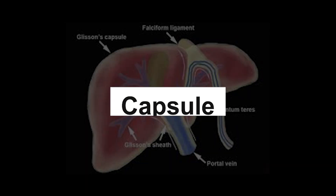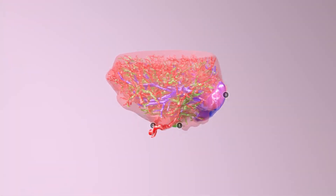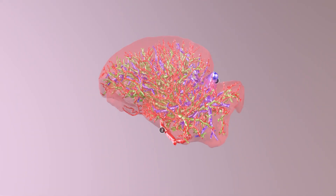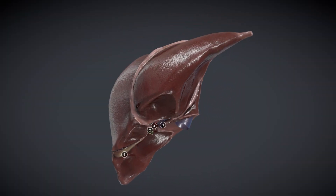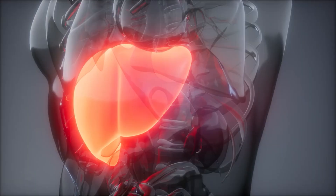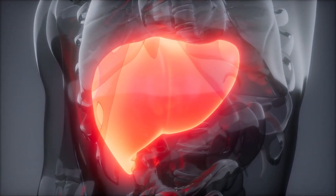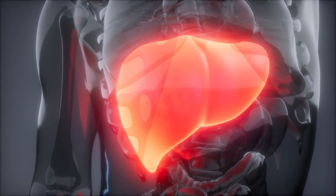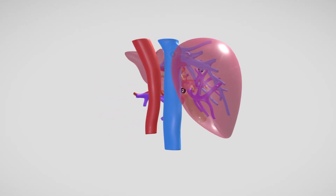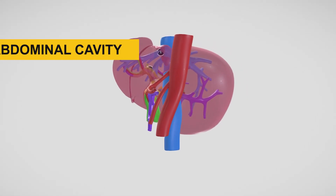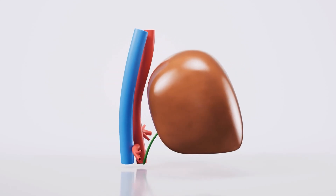Capsule. The liver capsule is a dense, fibrous connective tissue that forms a protective layer around the entire liver. It is relatively tough and resilient, and is composed of collagen fibers and connective tissue elements. The primary function of the liver capsule is to provide structural support to the liver and protect it from external forces, helping to maintain the liver's shape and integrity. The capsule also serves as a barrier that prevents the spread of infections or diseases from surrounding organs or tissues to the liver. It is attached to the liver's outer surface and also attaches to surrounding structures in the abdominal cavity, including the diaphragm and the abdominal wall, which helps keep the liver in its proper anatomical position.